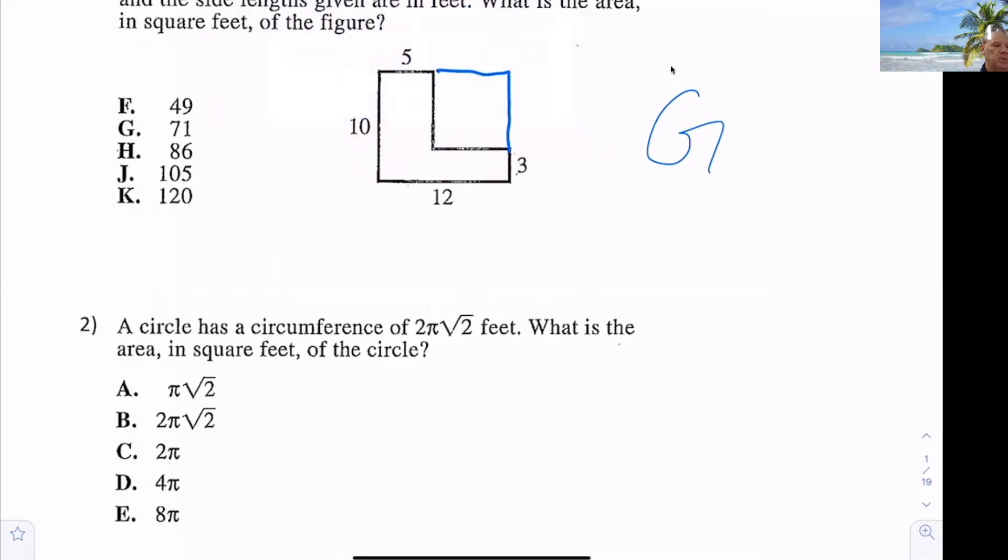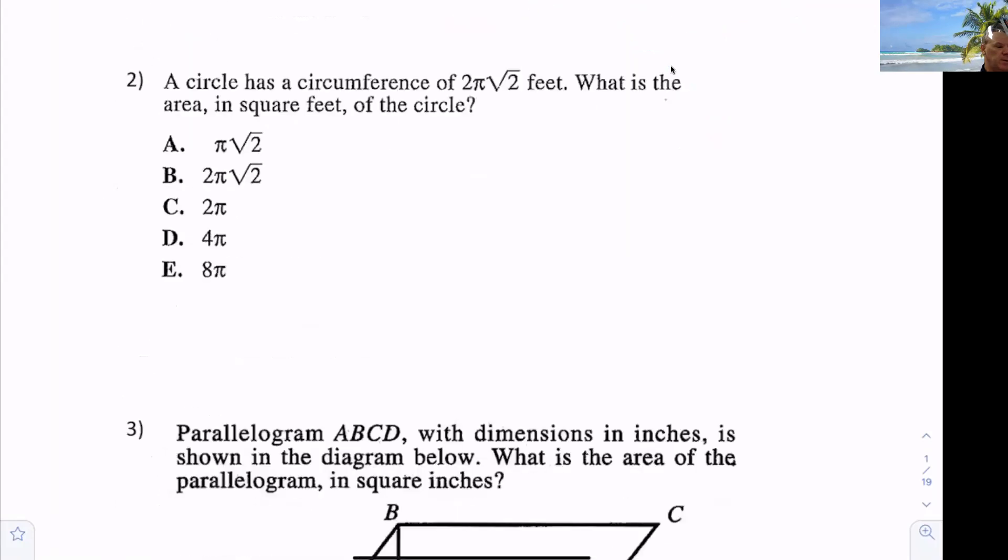So to me, it was 10 times 12, which is 120 minus. And then this was seven by seven, 49. That's how I see it as a subtraction, not as cut and add. It doesn't matter, but just a different way.